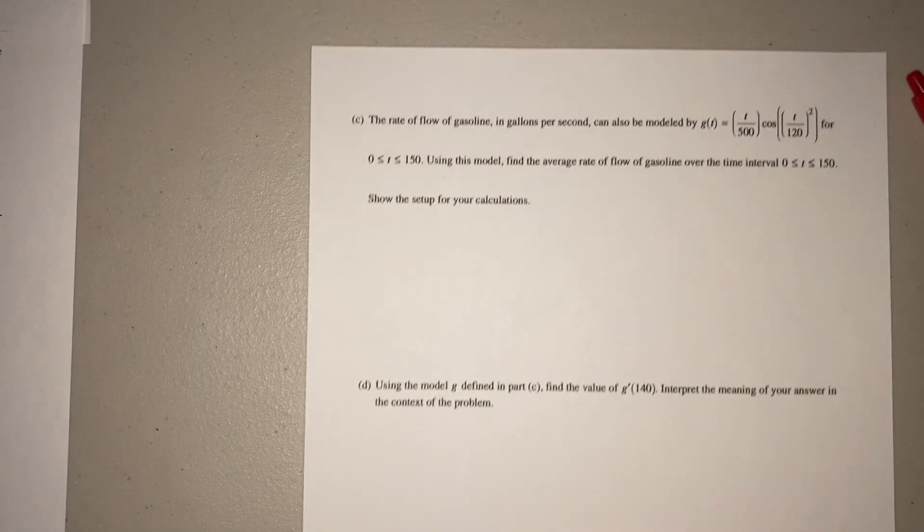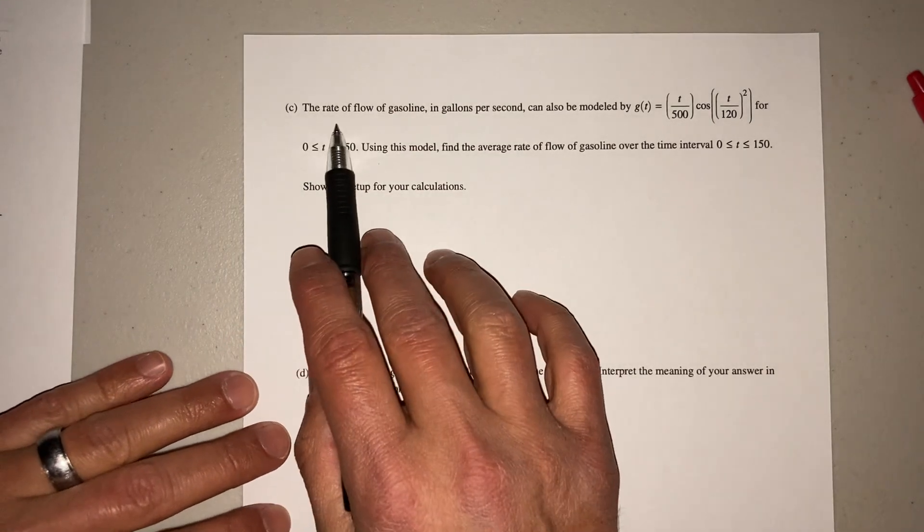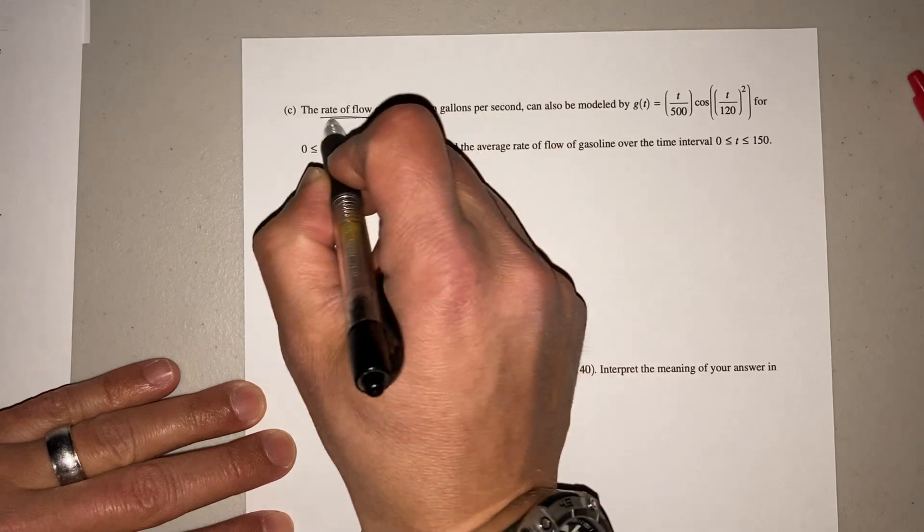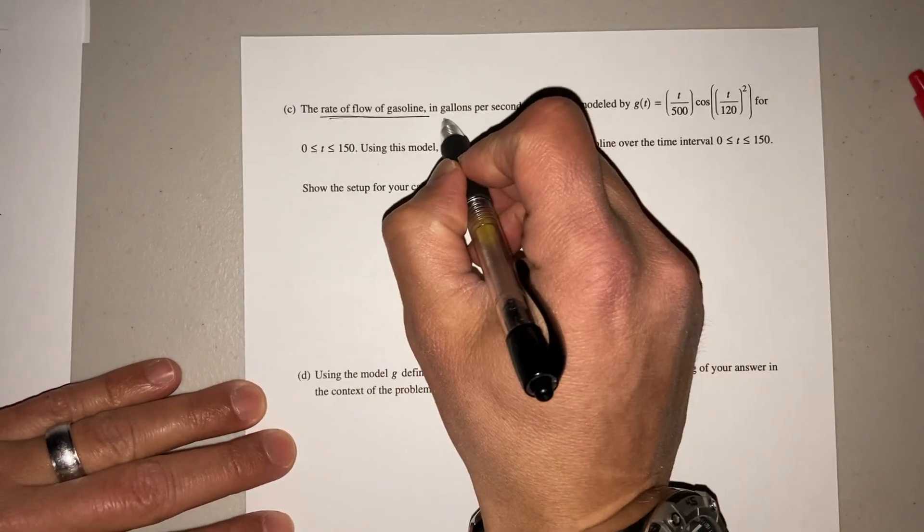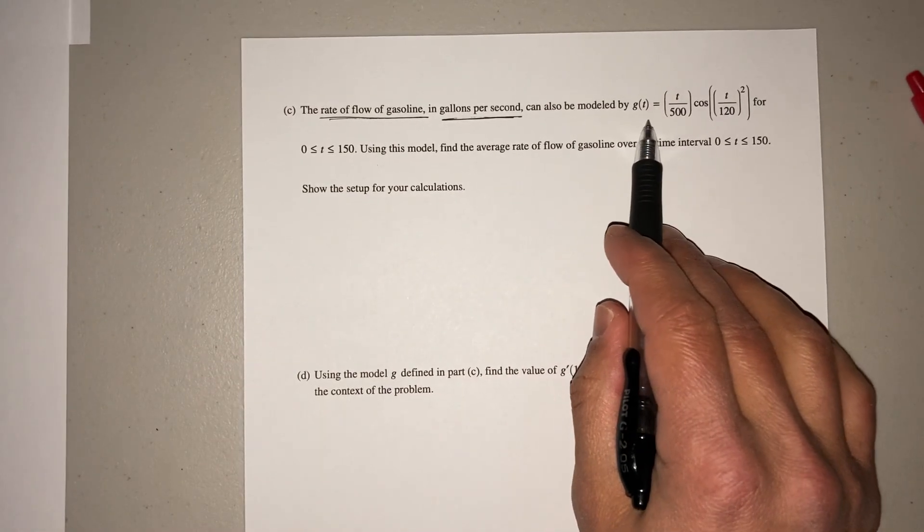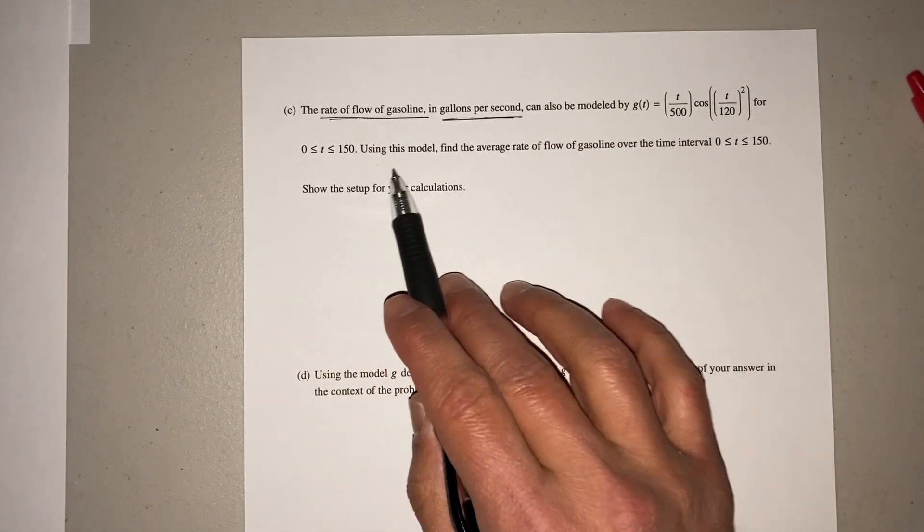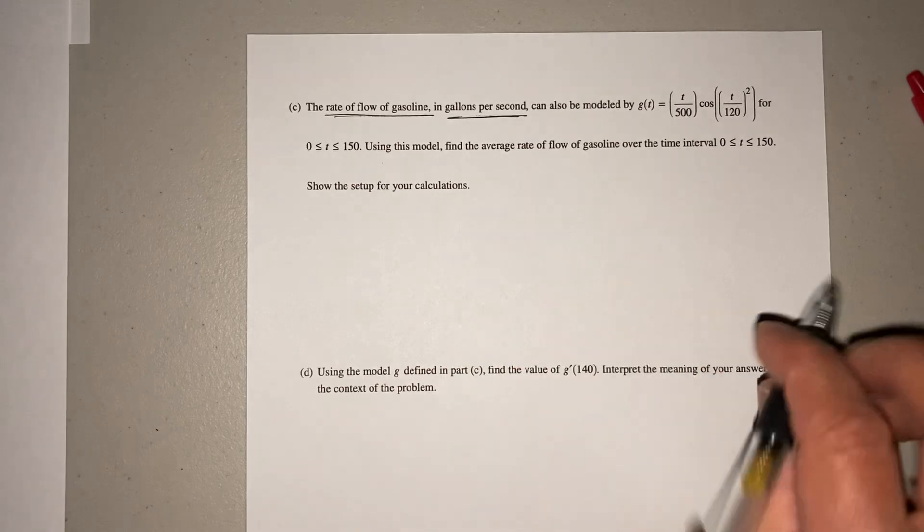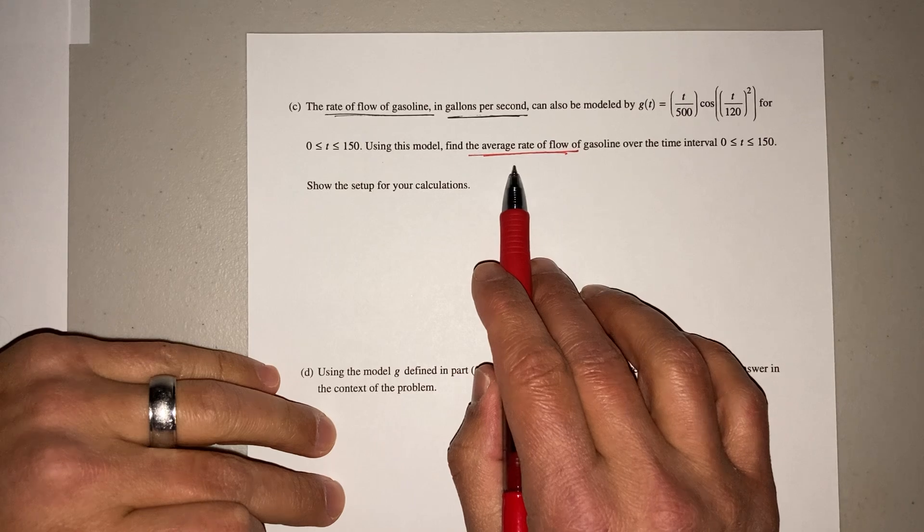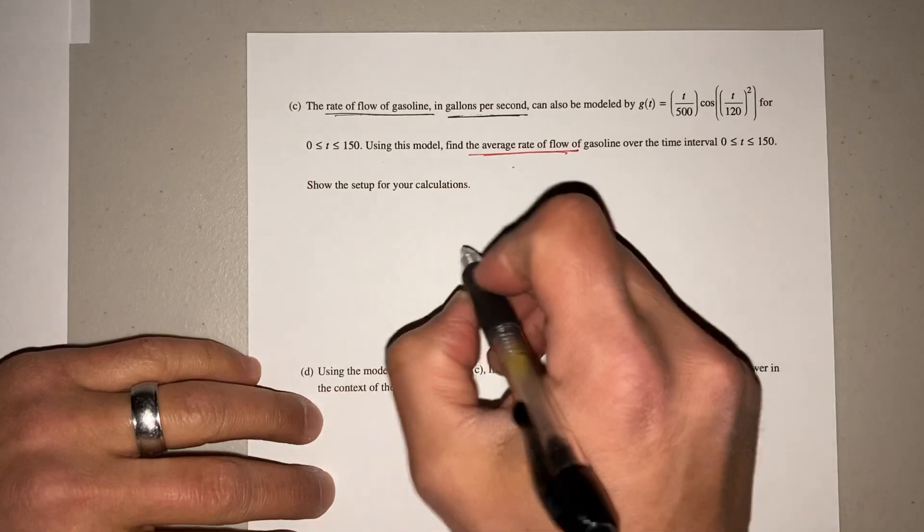Let's go ahead and keep going. In part C, it tells you the rate of flow of gasoline. That's important, right? Rate of change again. In gallons per second. There you go. There's your rate of change. Can also be modeled by this function, G of T. Between zero and 150. Using this model, find the average rate of flow. They ask this a lot. They ask this a lot. Over the time interval between zero and 150. Show the setup.